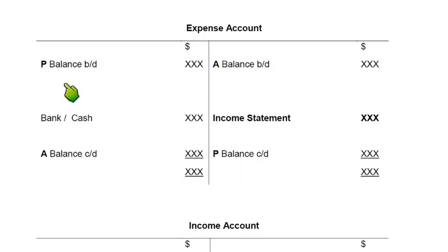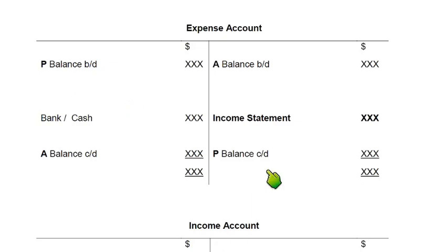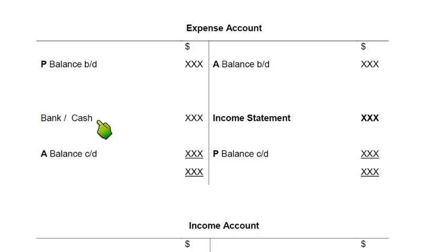I recommend you write PAAP with a pencil and after solving the question, rub it out so only balance BD and balance CD remain. Now, whenever we are paying for some expense, we make the entry: expense debit and bank or cash credit. The nature of the expense is always debit, so expense will be debited and we write the reference bank or cash.